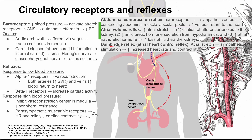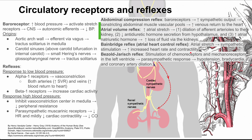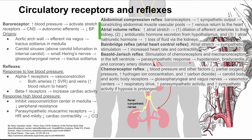Next is the Bainbridge reflex, also called the atrial heart control reflex. Also in response to atrial stretch, you'll have sympathetic stimulation and increased heart rate and contractility. Next is the Bezold-Jarisch reflex. This is stimulation of chemoreceptors and mechanoreceptors in the left ventricle, which then triggers a parasympathetic response that can cause hypotension, bradycardia, and coronary artery dilation.